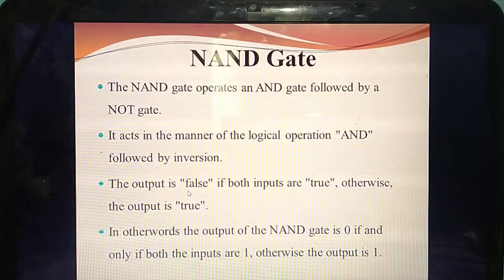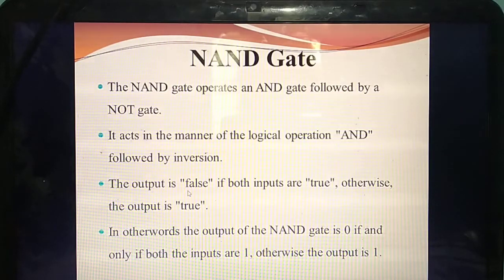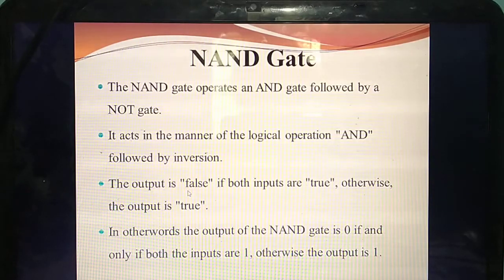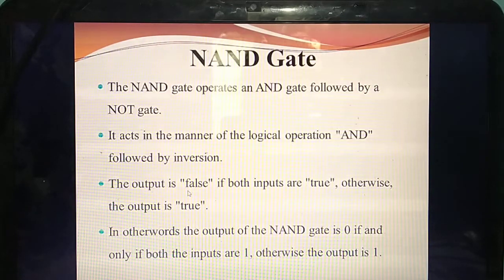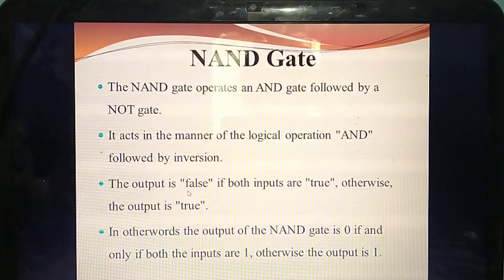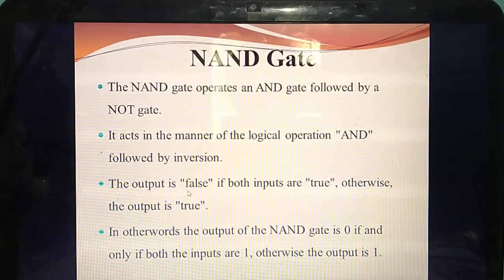For NAND gate: when is the output 0? Only when both inputs are 1. Otherwise the output is 1. For that reason I asked you to study AND, OR, and NOT gate thoroughly. Once you know those truth tables, you can compare: AND gate is opposite of NAND gate; OR gate is opposite of NOR gate.